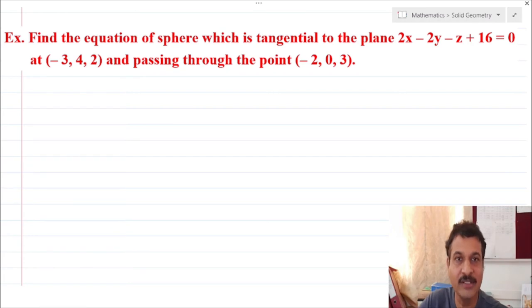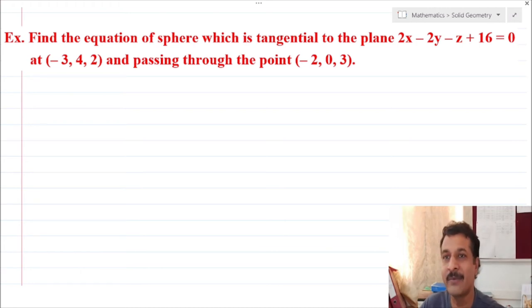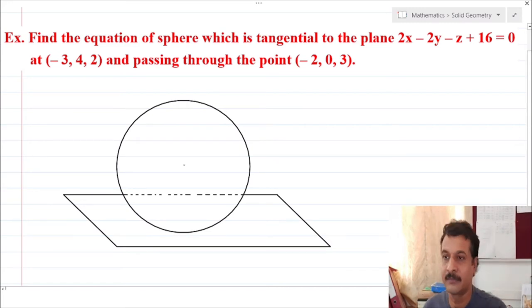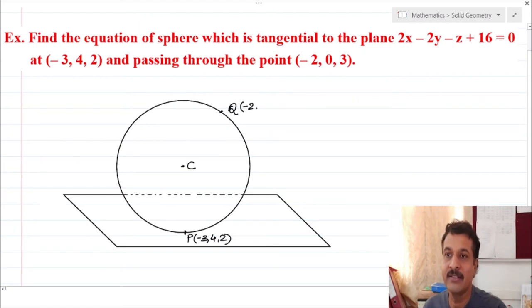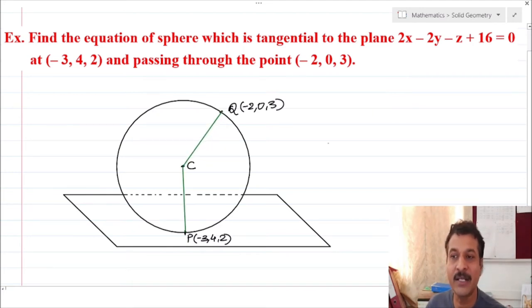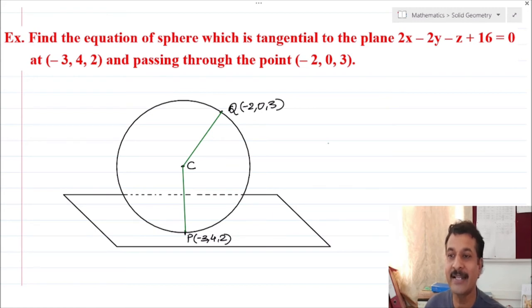Another thing: in solid geometry, try to imagine the geometry — that is, what we require: the centre, the radius, the plane, and the distance from the centre of the sphere to the plane. Try to make a triangle or draw the distance line, then you can evaluate it easily. You can see here: the sphere has centre C, it touches the plane at point P which is (minus 3, 4, 2), and the sphere passes through point Q which is (minus 2, 0, 3). We want to find the equation of the sphere. CP is nothing but the line perpendicular to the plane, meaning CP is the normal to the plane, so it is easy to find the direction ratios of CP.